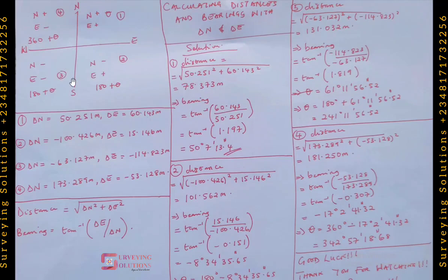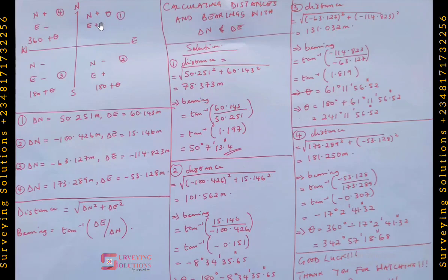On the third quadrant, you are south and towards the left — which is west — so both northing and easting are negative. On the fourth quadrant, you are back up, so northing is positive, but still on the left side, meaning easting is negative. These sign conventions are straightforward — pause and rewind if needed.